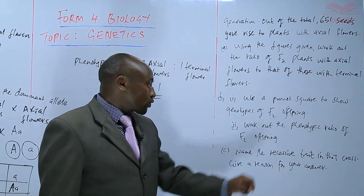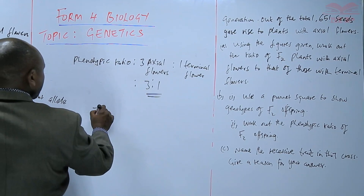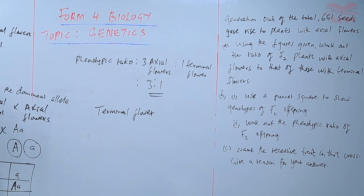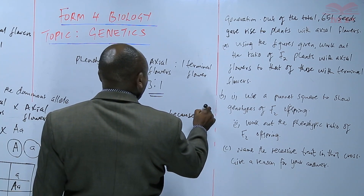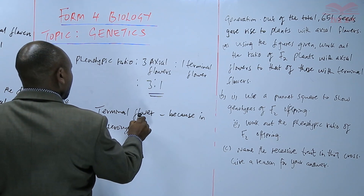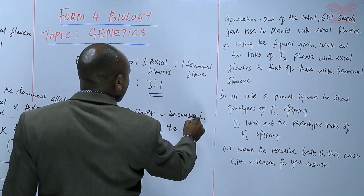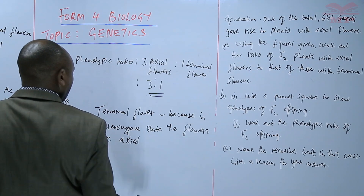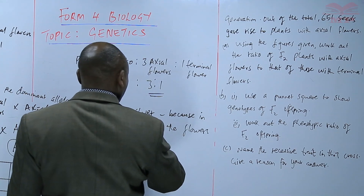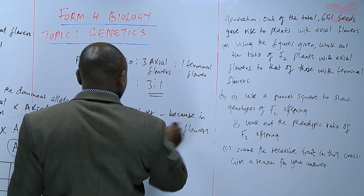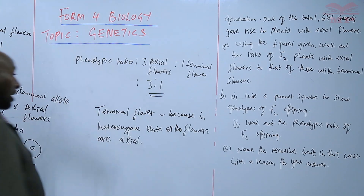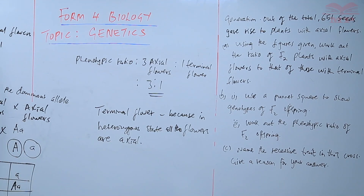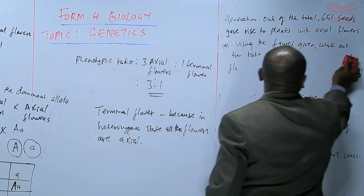Next, name the recessive trait in this cross and give a reason for your answer. The recessive trait is the terminal flower. The terminal flower is recessive because in the heterozygous state all the flowers are axial — that is, the axial trait is expressed and the terminal trait is not. This shows that the terminal flower is being dominated by the axial flower.